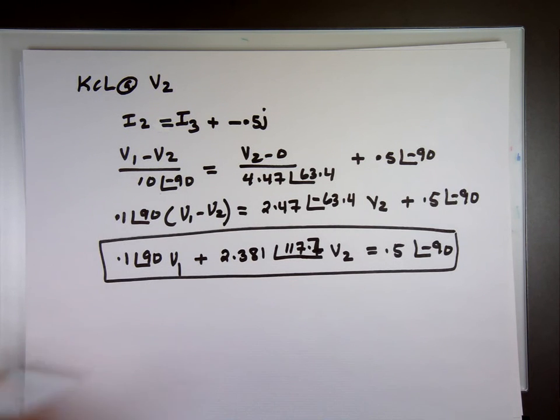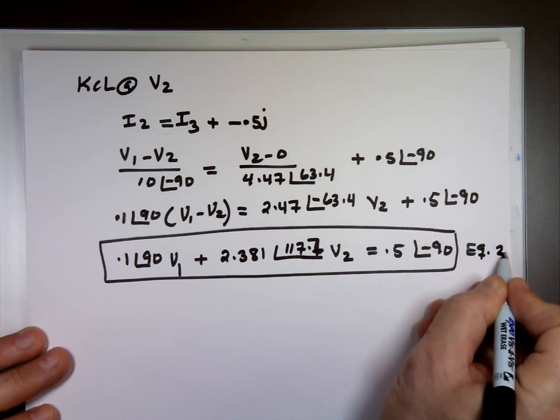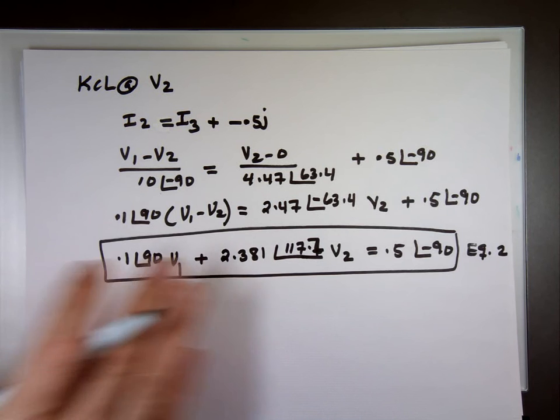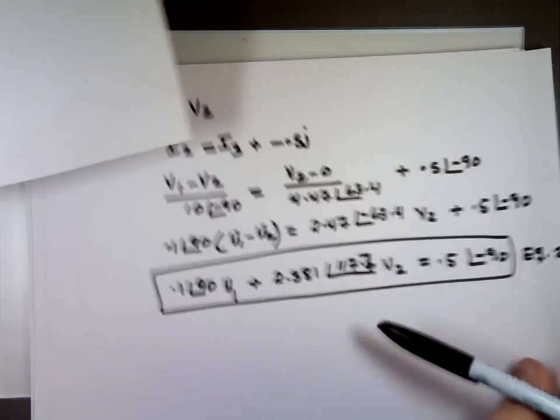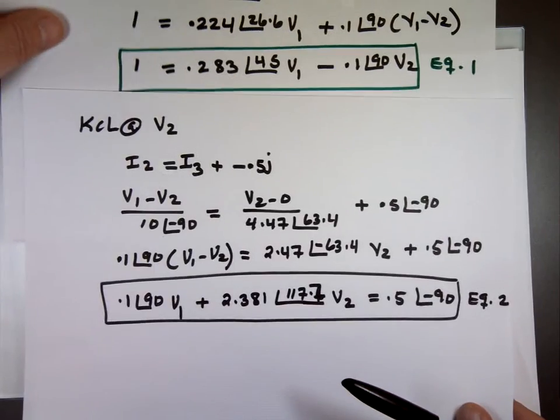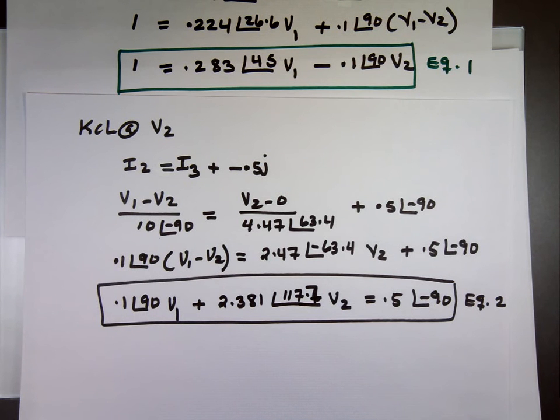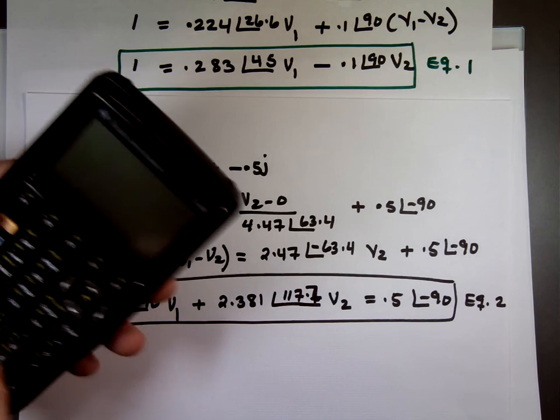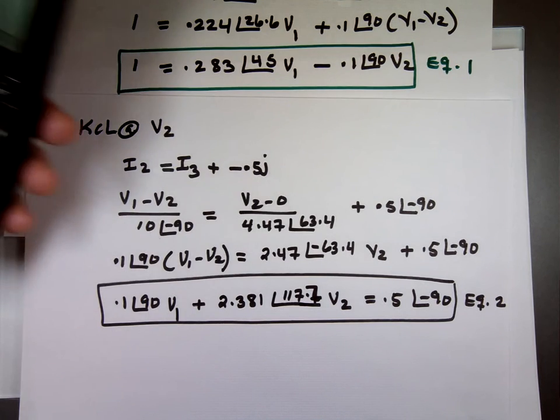So now we get two equations by two unknowns. That's EQ2. I have EQ1, EQ2, right here. Can you see them both? Let me go to my calculator now. Clear, simultaneous, two equations.